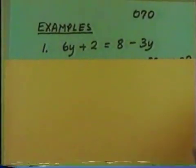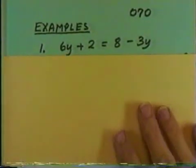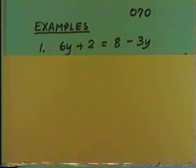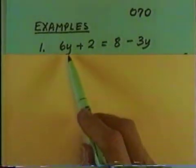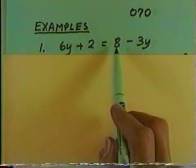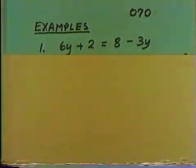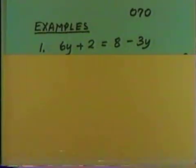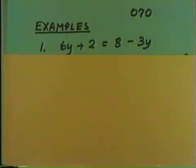Let's look at some examples. Our first example is 6y + 2 = 8 - 3y. Notice that in this equation we have a variable term on the left, a variable term on the right, a constant term on the left, and a constant term on the right. Remember that our job is to get the variable by itself on one side and the constant by itself on the other side.